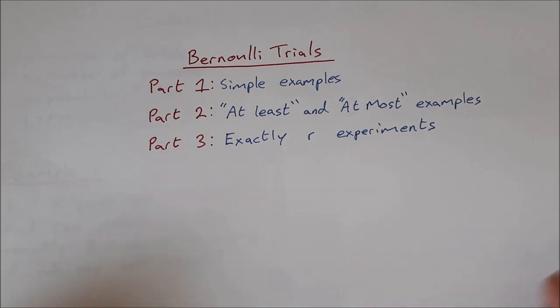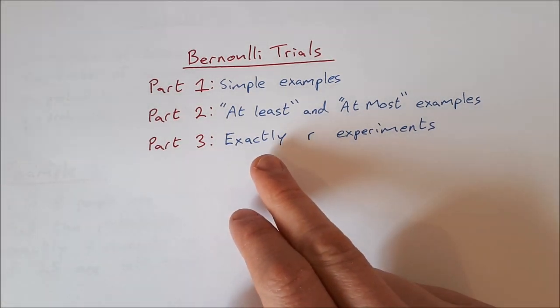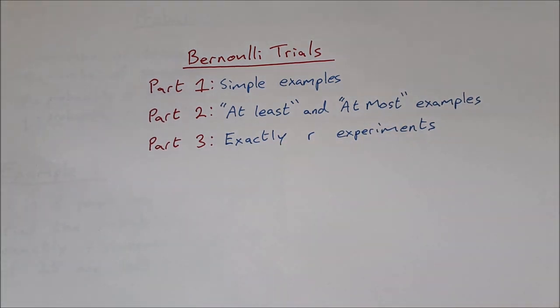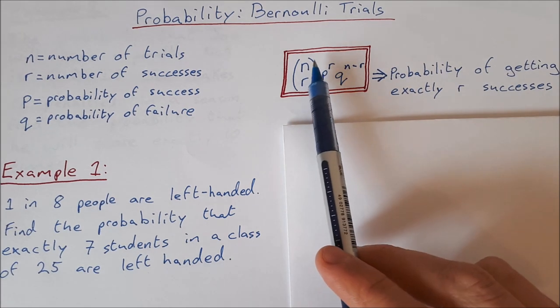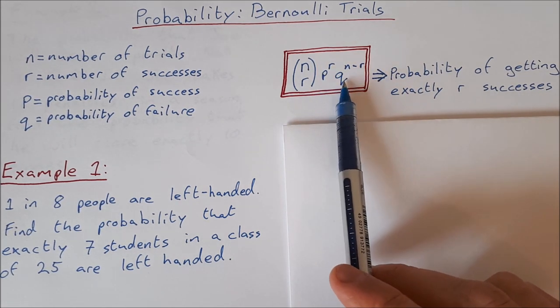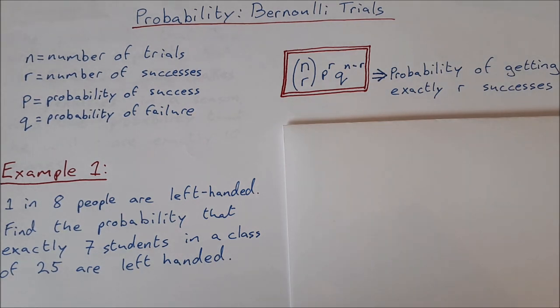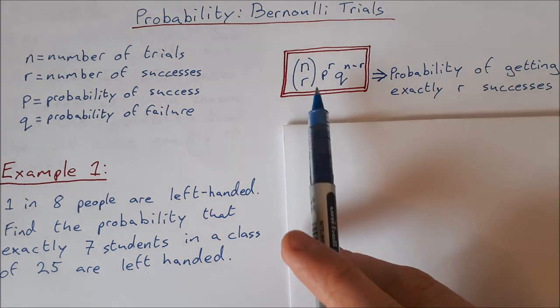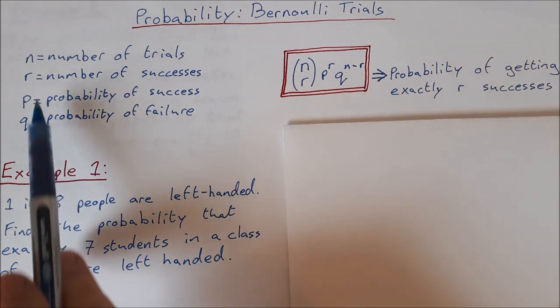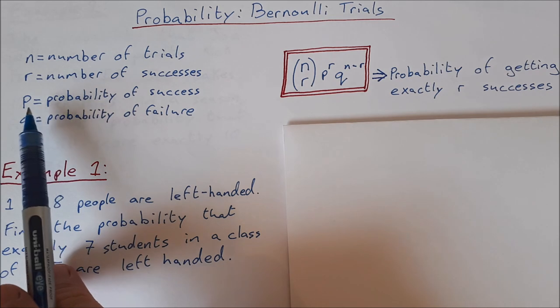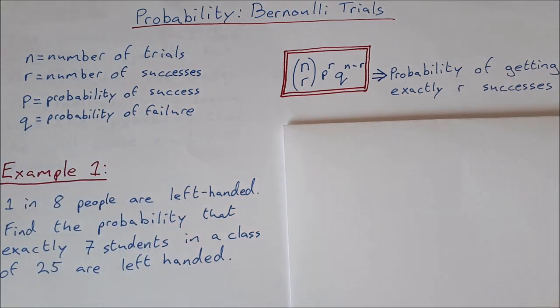And then the last part, part three, is going to be questions where it wants exactly R experiments to happen. So just another type of question that we have. So a little bit about Bernoulli trials. This is the formula. Maybe you recognize it. This is n choose R times p to the power of R times q to the power of n minus R. Now, I'm not going to use the formula as such. I'm going to show you a way to just reason out and talk yourself through the question. And in that way, you actually make the formula without having to remember all of these things. But if you prefer to use the formula, you absolutely can. So n is the number of trials, R is the number of successes, p is the probability of success, and q is the probability of failure.